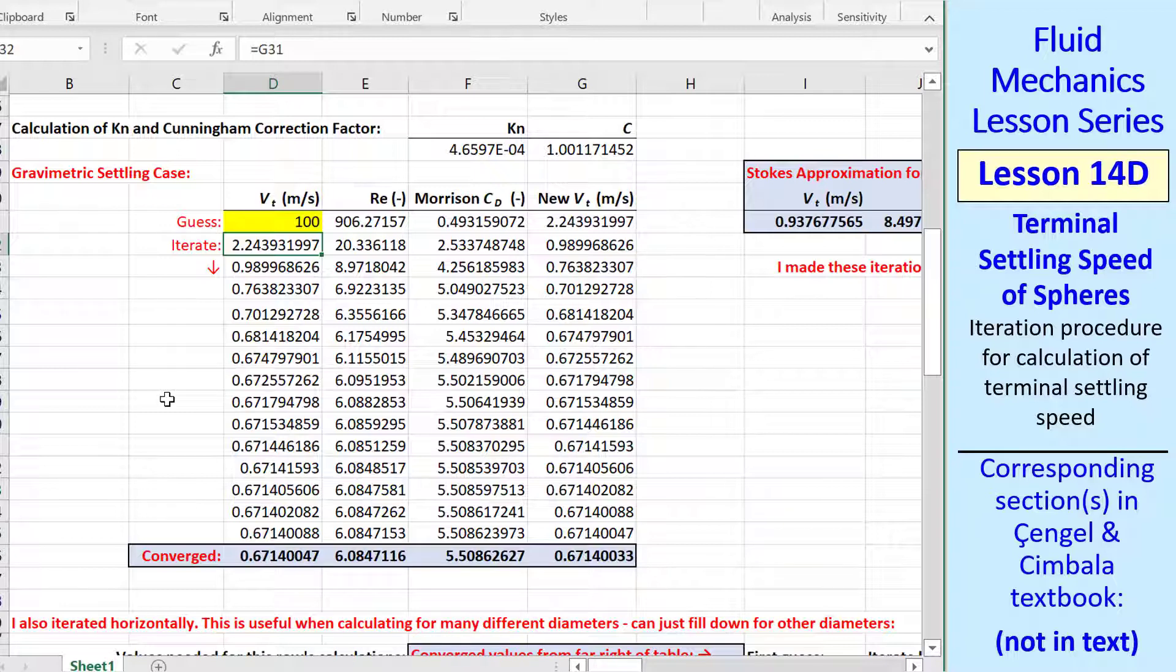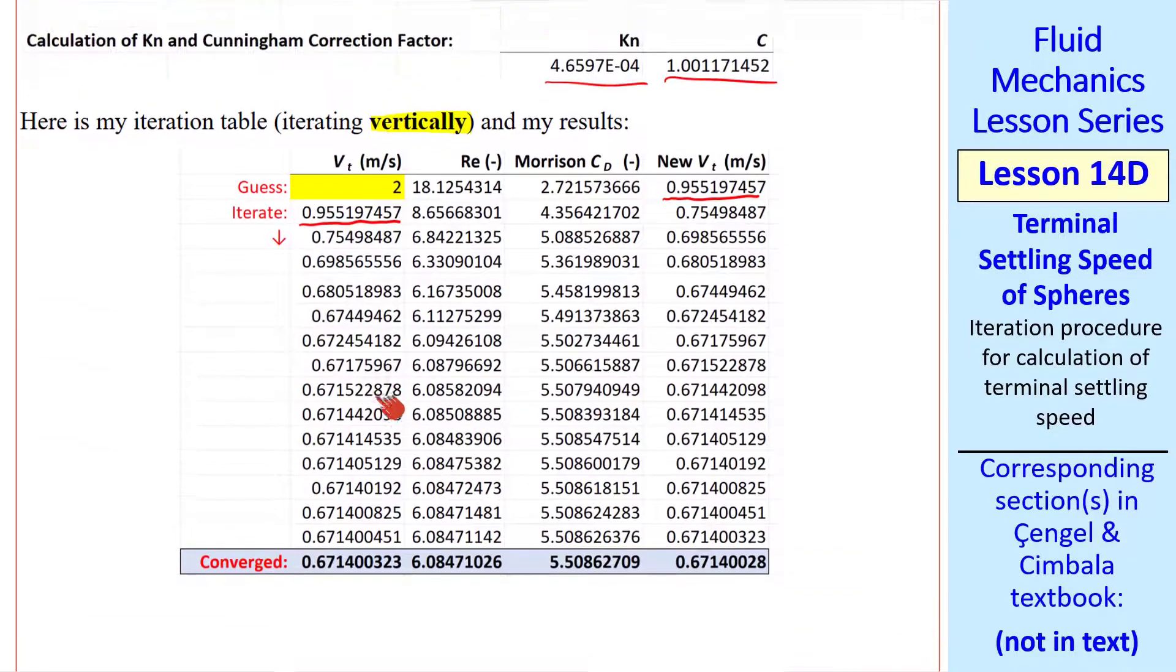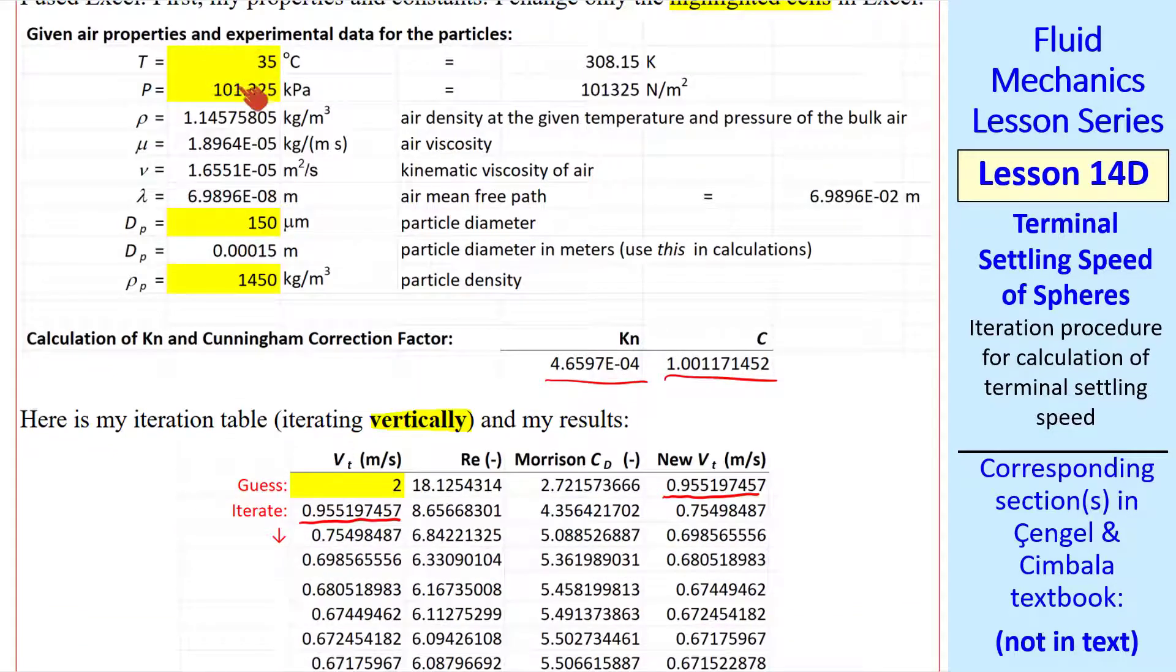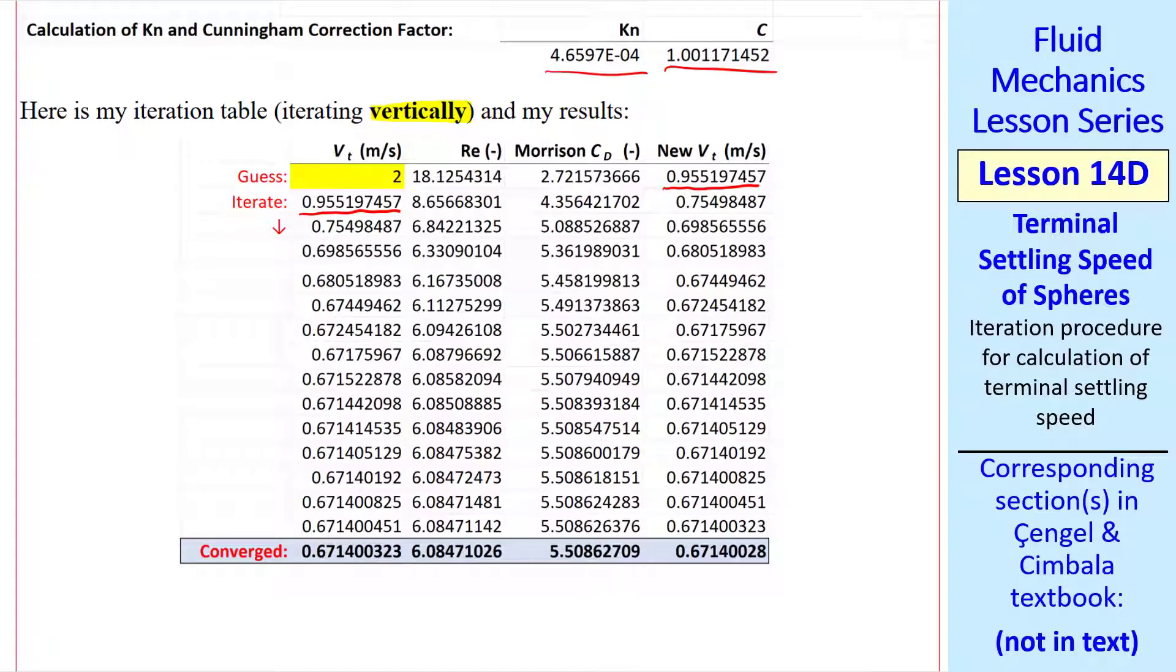I strongly urge you to duplicate these results in your software. Use my same particle diameters and make sure that you get my same results, at least to five digits or so. Then you can trust that you're doing your software correctly. And once you have this set up in your software, you should be able to change temperature, pressure, particle diameter, and particle density. And the software will automatically update to the correct values of vt.